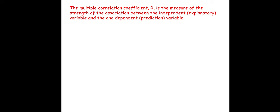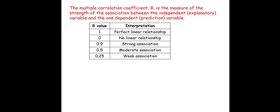In this video we will be discussing multiple correlation. The multiple correlation coefficient, capital R, is the measure of the strength of association between the independent variable and a dependent variable. When R equals 1, it implies a perfect linear relationship. If R equals 0, that implies no linear relationship. If R is 0.9, that means strong association. If R is 0.5, that implies moderate association. If R is 0.25, it means weak association.